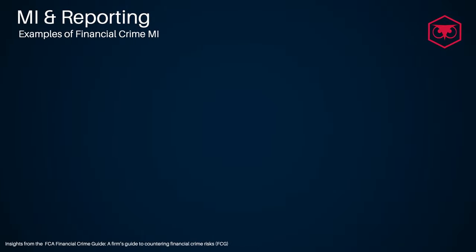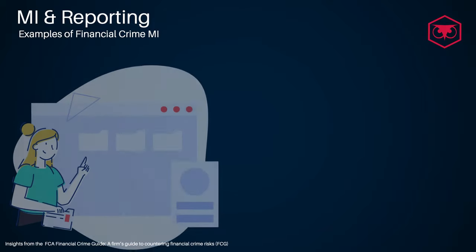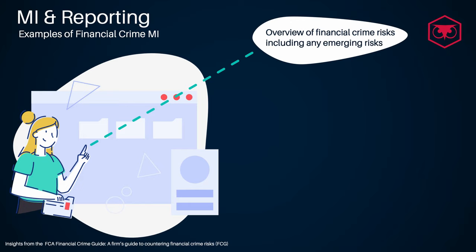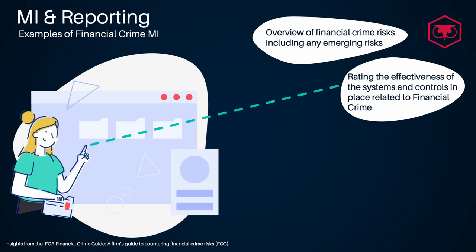Some examples of financial crime MI to meet regulatory compliance reporting requirements could be: an overview of the financial crime risks including any emerging risks, and rating the effectiveness of the systems and controls in place related to financial crime.